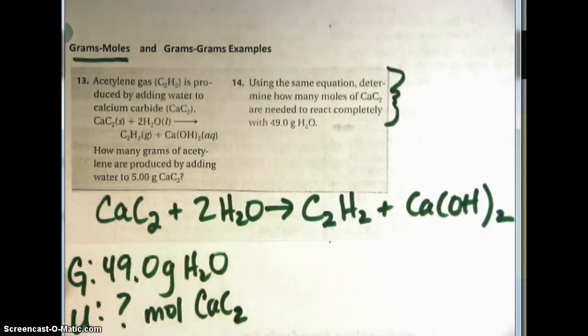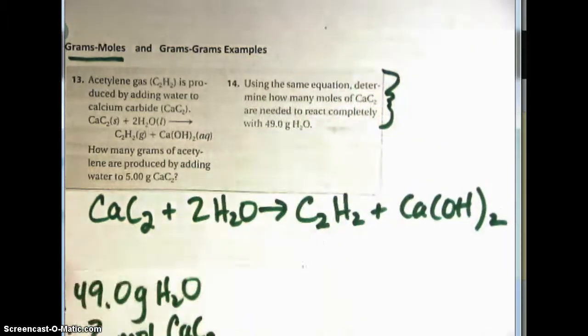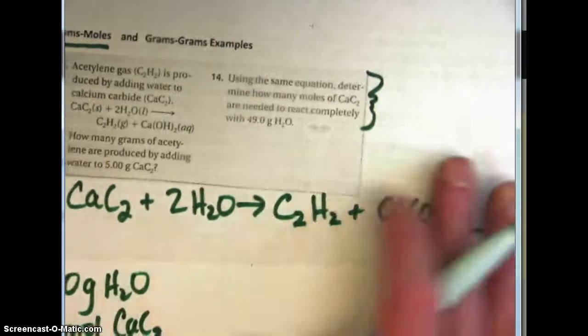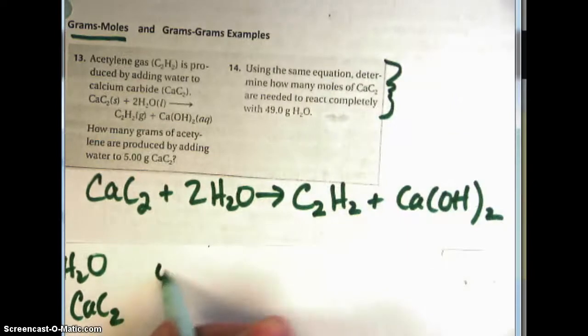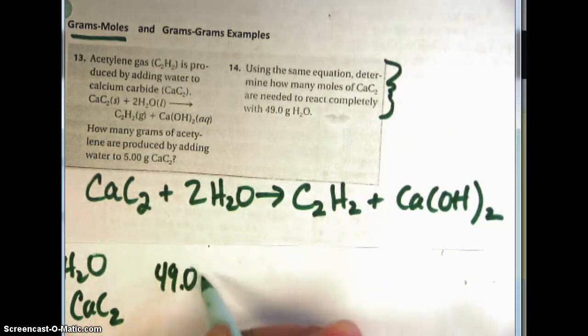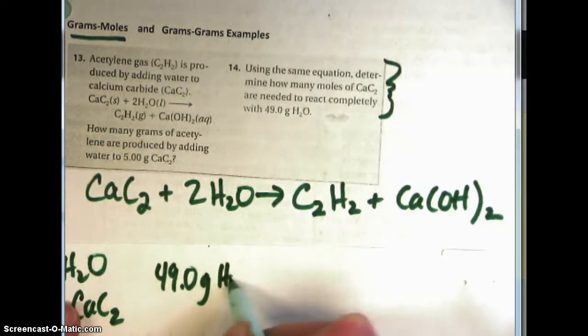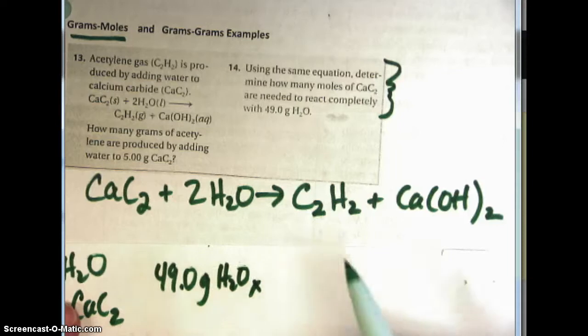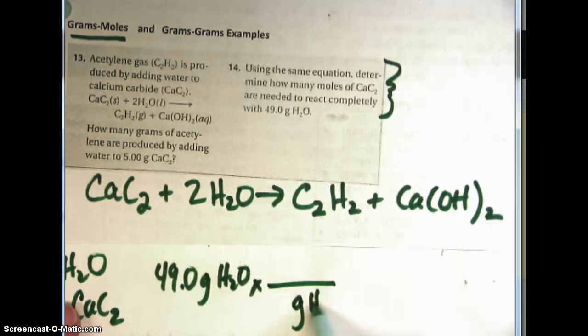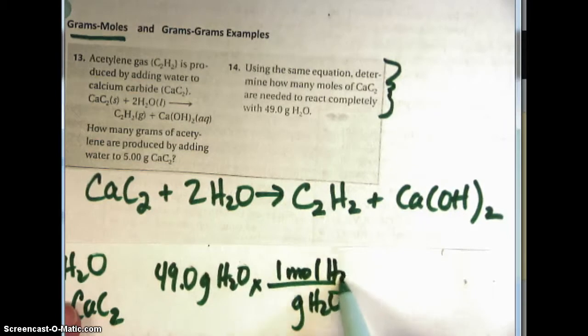So this will be a multiple-step problem. We're going to start with the given and we're going to start with 49.0 grams of water. We're going to have to convert to moles of water, grams of water to one mole of water using the molar mass of water.